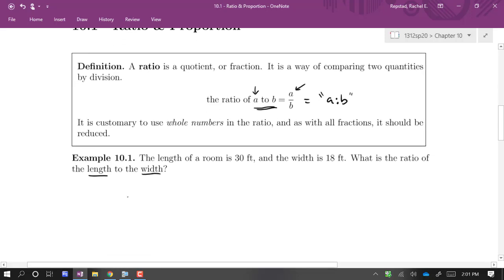So the order matters again. Length to width means I need the length on top. The length is 30 feet. The width is 18 feet.